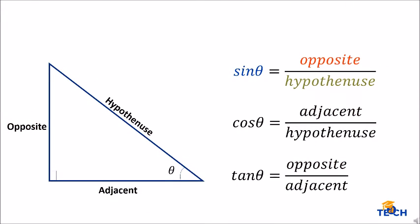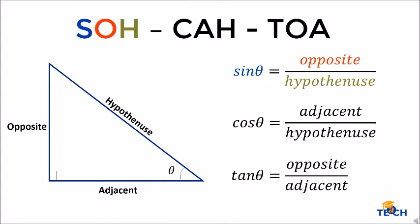Let us gather all the primary trigonometric functions: sine theta, cosine theta, and tangent theta. Memorizing the trigonometric length ratios can be confusing, so we have a shortcut — SOH-CAH-TOA. For SOH: sine theta equals opposite over hypotenuse.